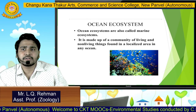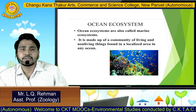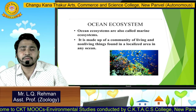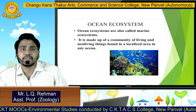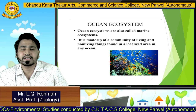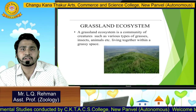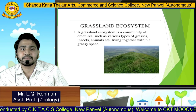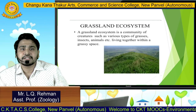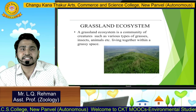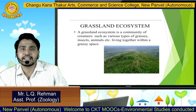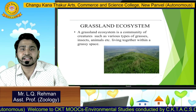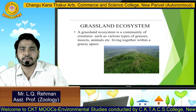Next is ocean ecosystem. Ocean ecosystems are also called marine ecosystems. It is made up of a community of living things and non-living things found in a localized area of any ocean. Next is grassland ecosystem. A grassland ecosystem is a community of creatures such as various types of grasses, insects, animals, etc., living together within a grassy space.